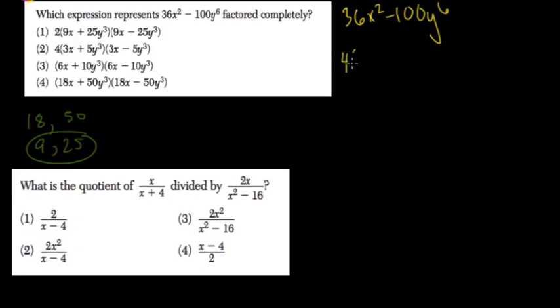So 4 times, oh sorry, 4 times 9x squared minus 25y to the sixth.